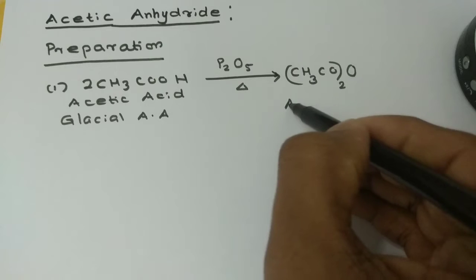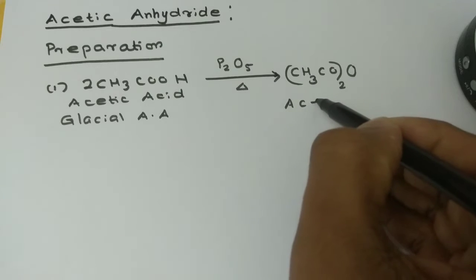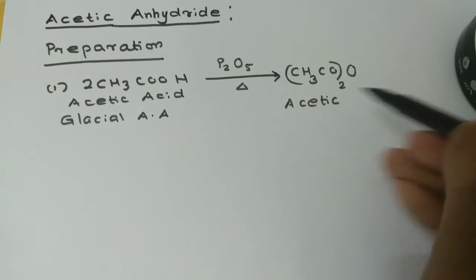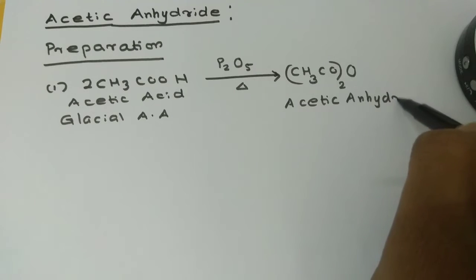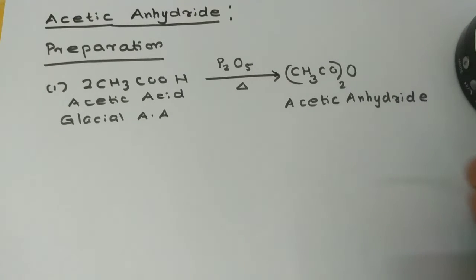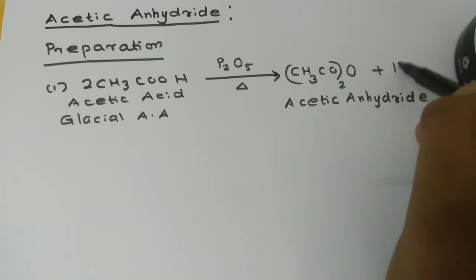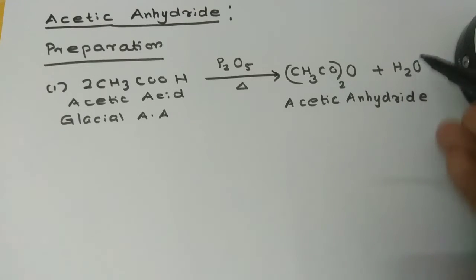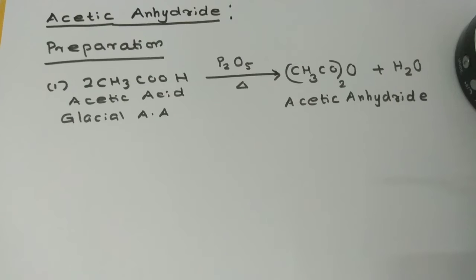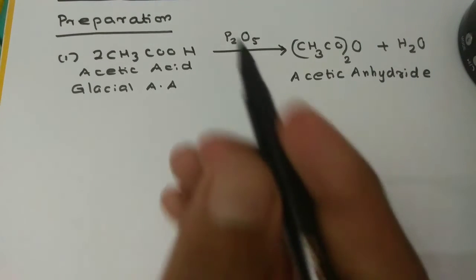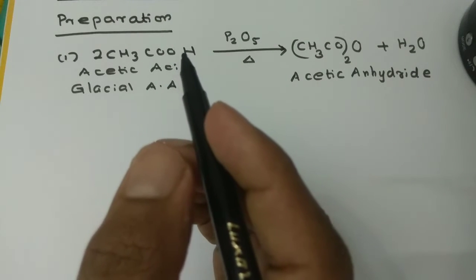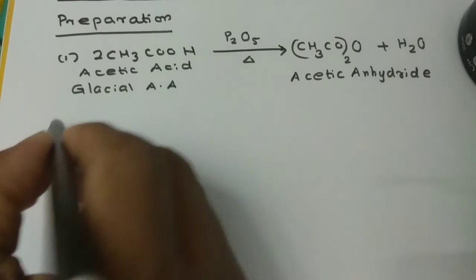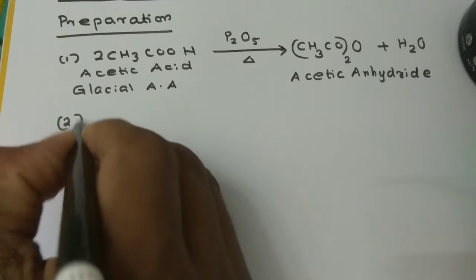The product formed is called Acetic Anhydride. We add a by-product as well. Glacial Acetic Acid reacts and this is the first method.